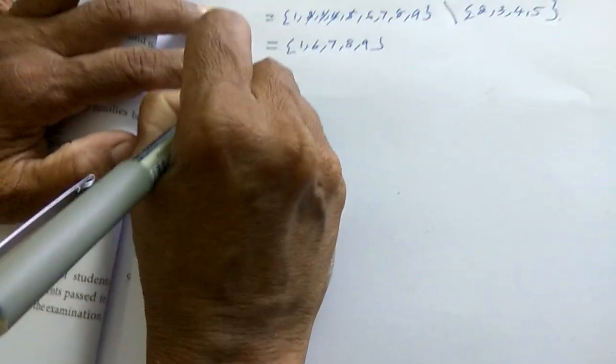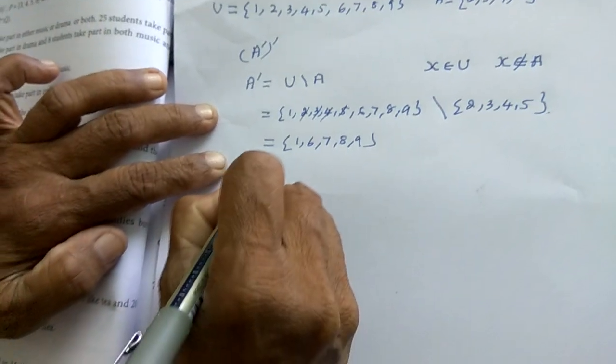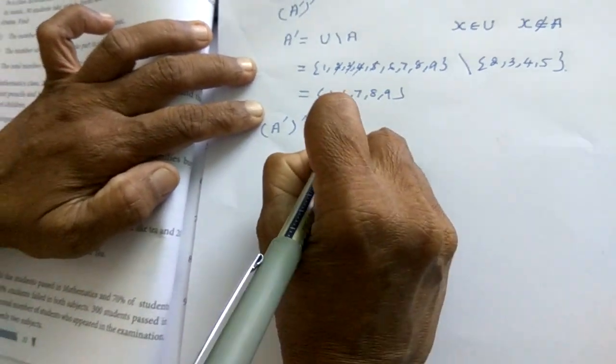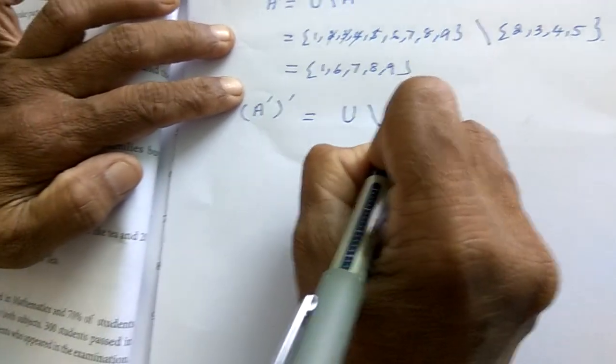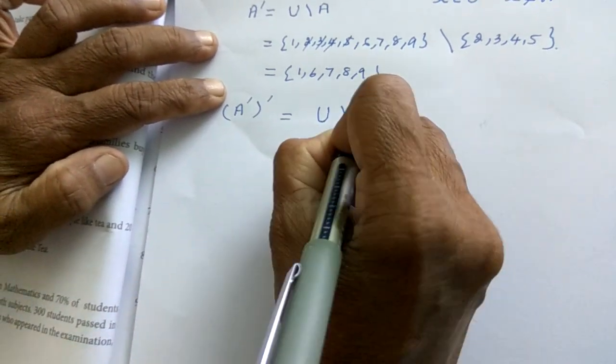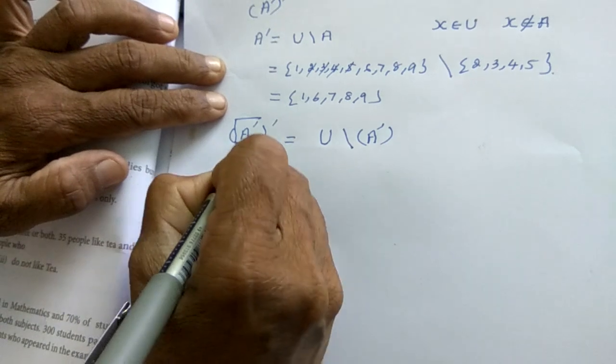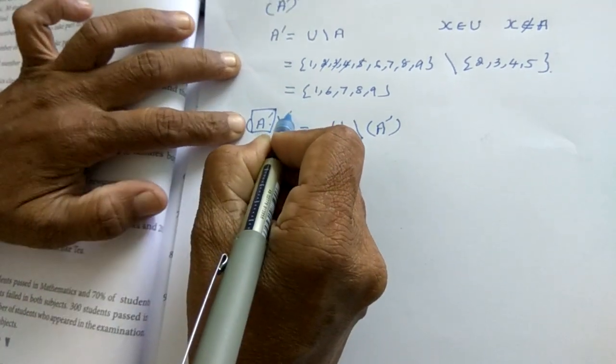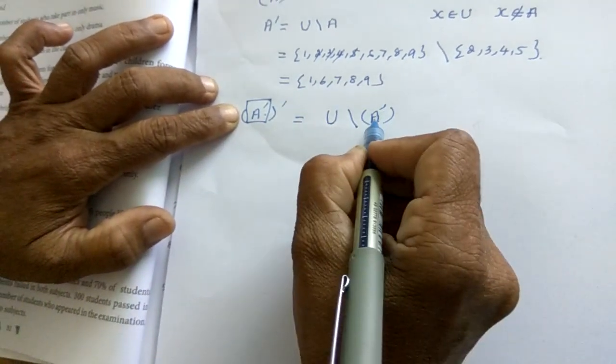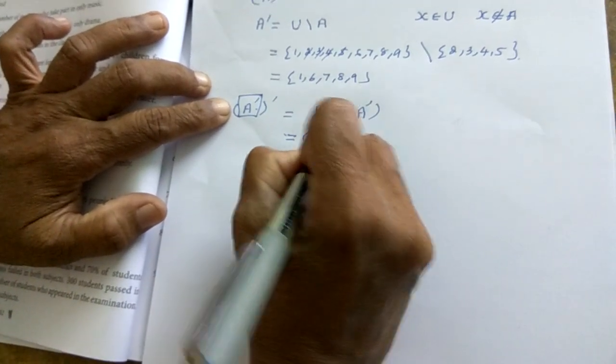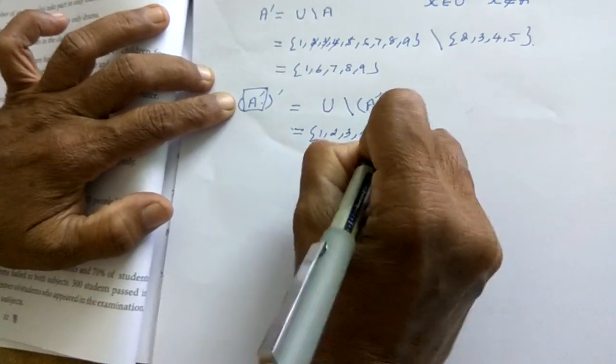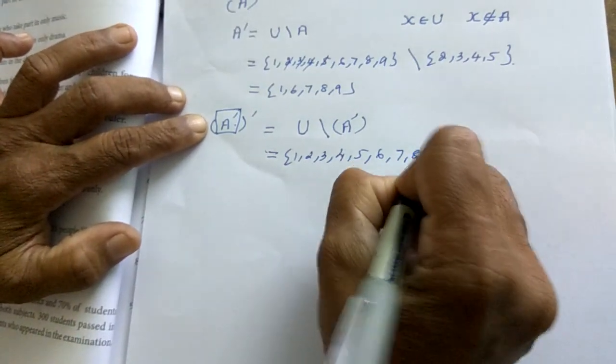Next, what are they asking? A dash, the whole dash. So here, U difference, what you should write? A dash. Because for this A dash, once again you are finding out the complement. So you have to write A dash. So what is U? 1, 2, 3, 4, 5, 6, 7, 8, 9.